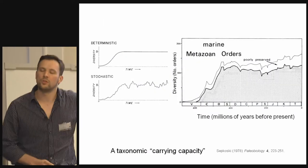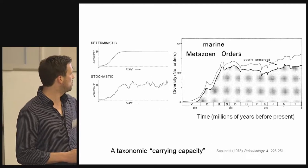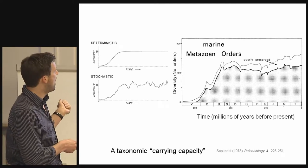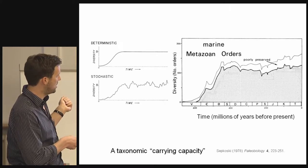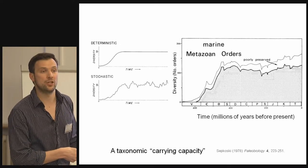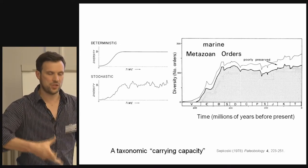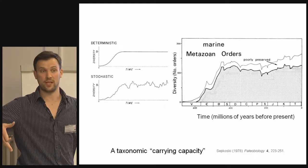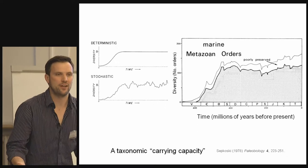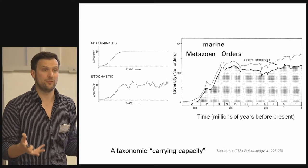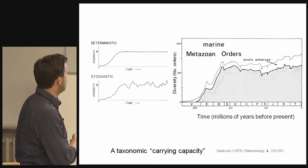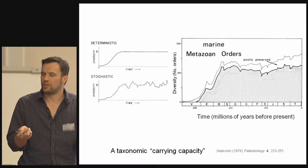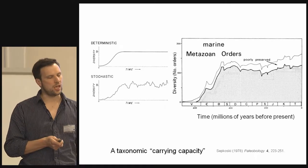Sapkowski, in a seminal series of papers in Paleobiology in 1978, talked about a taxonomic carrying capacity. He was looking at the number of orders as opposed to species, and plotted a line showing an exponential increase to some limit. Carrying capacity comes from population ecology — the idea that the number of individuals that can persist in a space is resource limited. That logic extends from resource limitation to niche limitation: there's only a certain number of ways of living in the world. Sapkowski argued that rather than a deterministic model, some kind of stochastic model is more realistic, given the vagaries of geological preservation and climate change.